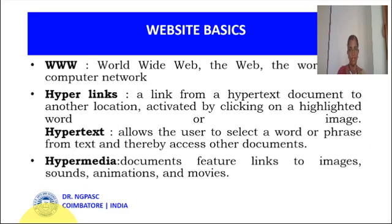The World Wide Web, also called the web, is the world of computer networks. Hyperlinks and hypertext: a hyperlink is a link from a hypertext document to another location, which is activated by clicking on a highlighted word or image. Hypertext allows the user to select a word or phrase from text and thereby access other documents.